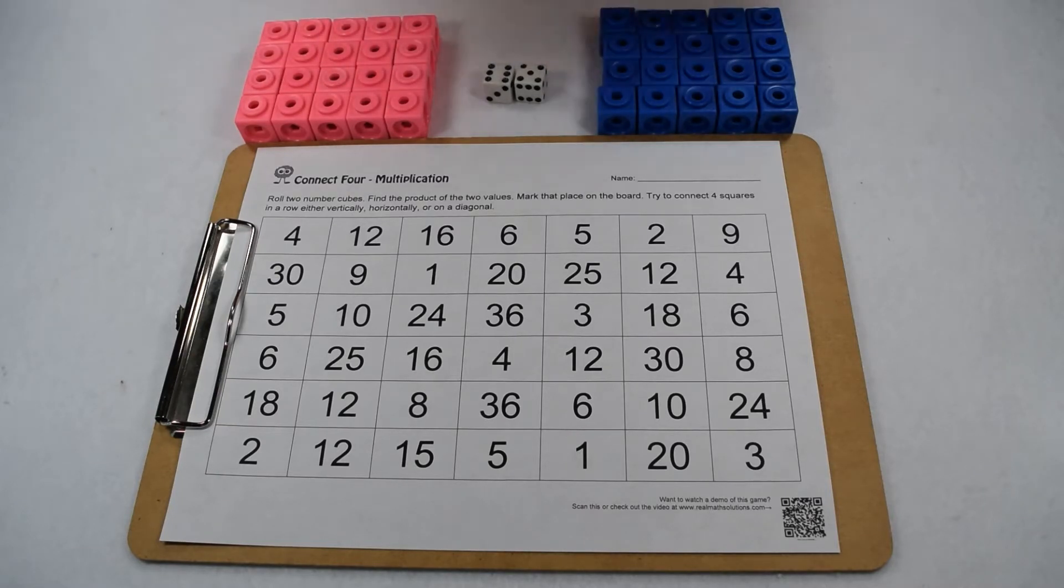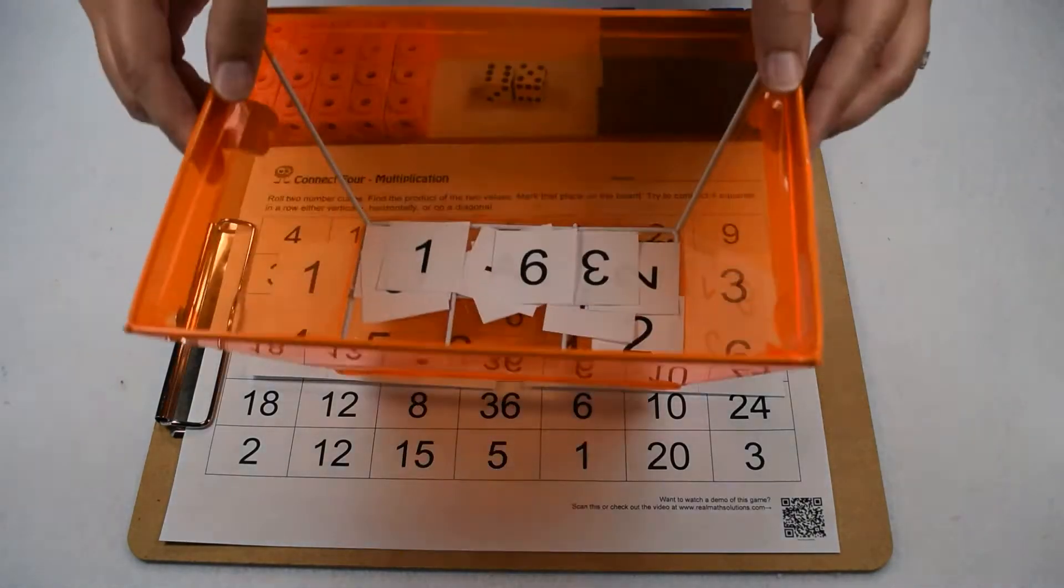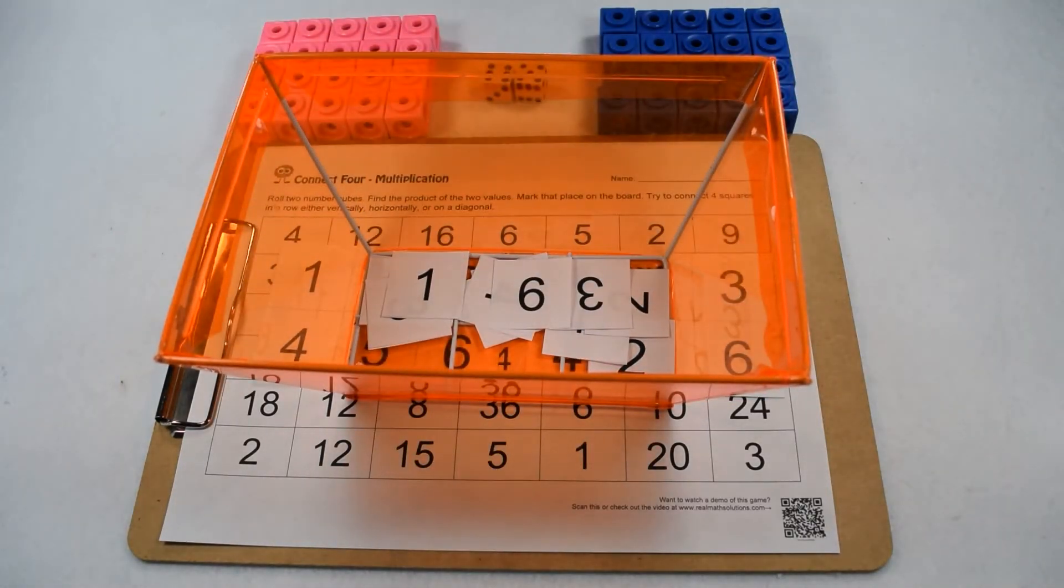Each pair of players is going to need two dice. If you don't have dice, we've included sets of numbers one through six that you can cut apart, put in a bin, and have students draw from the bin instead.